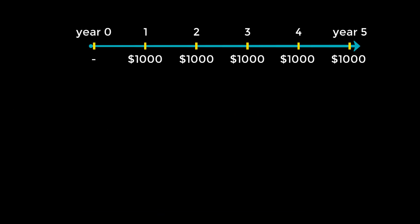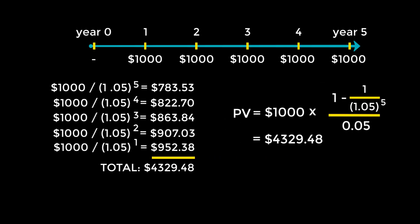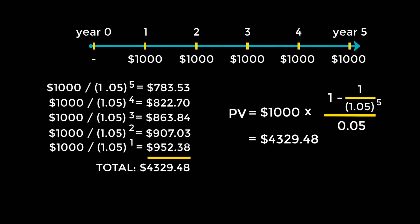For the sake of comparison, let's solve the following problem by discounting each cash flow individually on the left-hand side, and using our new formula for the present value of annuities on the right-hand side. Assume a rate of 5%. We can see that they have the same value, but the formula involves much less writing.